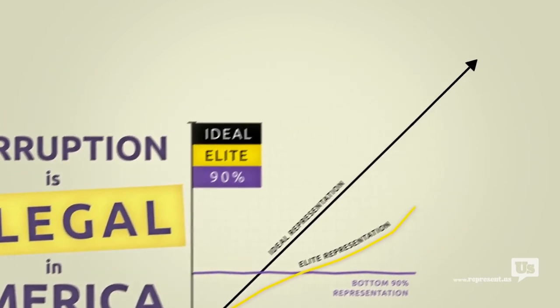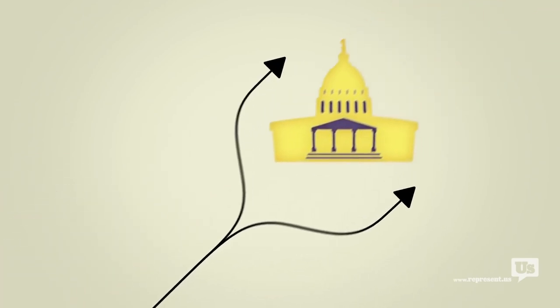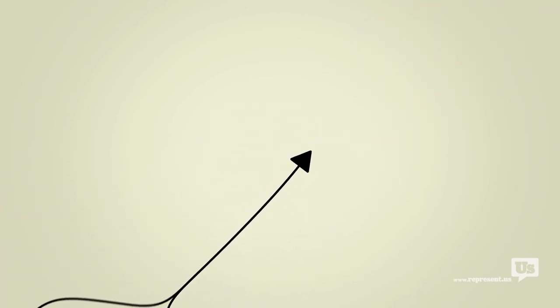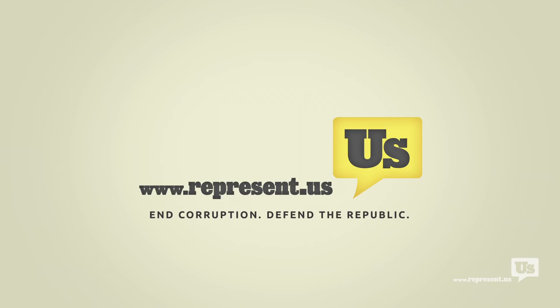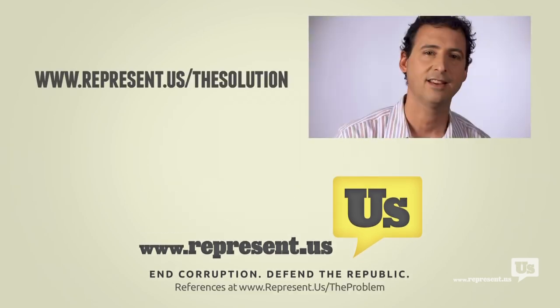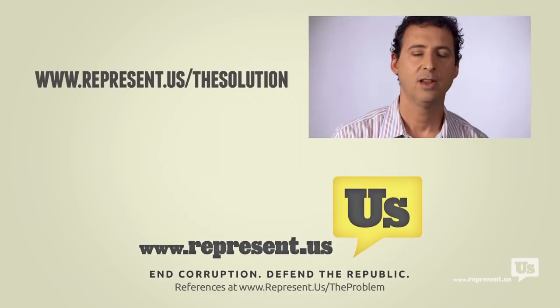What we need is a plan that lets us go around Congress and do what the American people do best. Fix this mess ourselves. Well, good news. We have that plan and it's already working. Now that we've got the problem covered, let us show you how to be part of the solution.